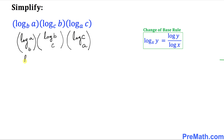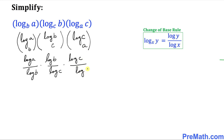The first one in parentheses can be written as log of a divided by log of b, times the second one written as log of b divided by log of c, and finally the third parentheses written as log of c divided by log of a. Now you can see log of a cancels with log of a, log of b reduces with log of b, and log of c cancels with log of c. Since everything cancels, our answer turns out to be simply 1.